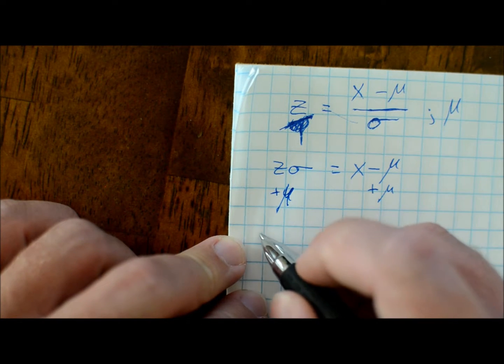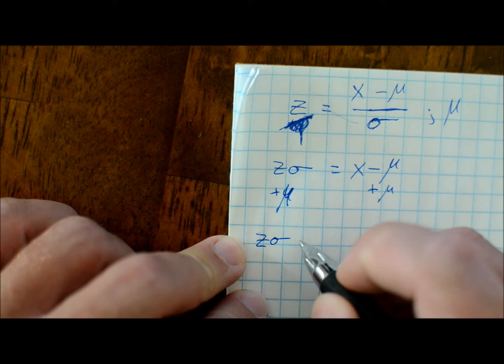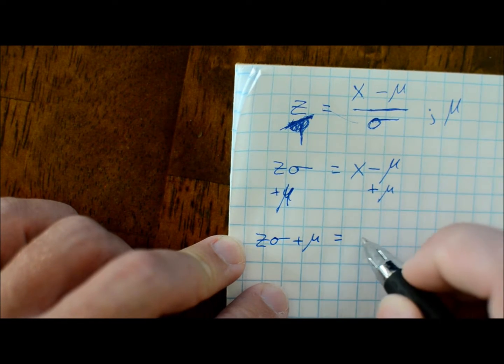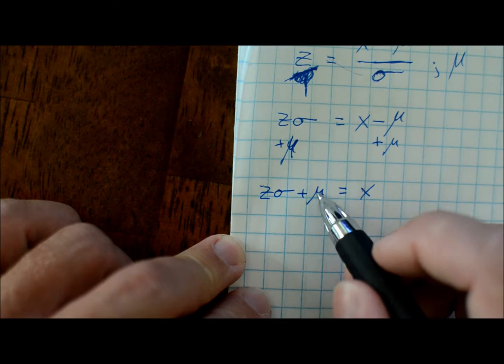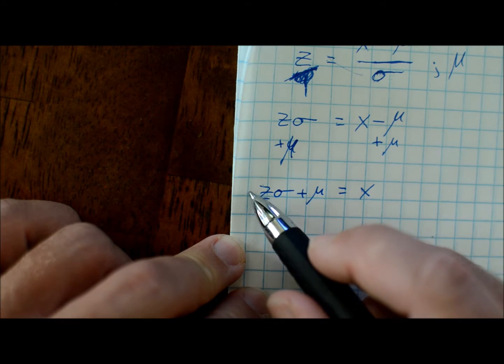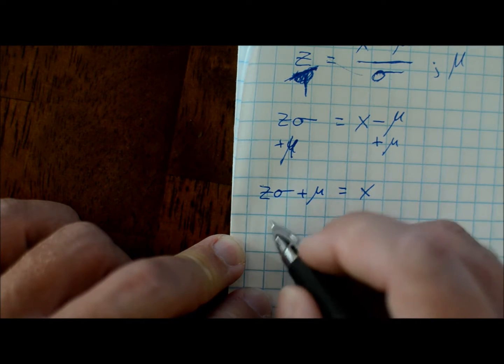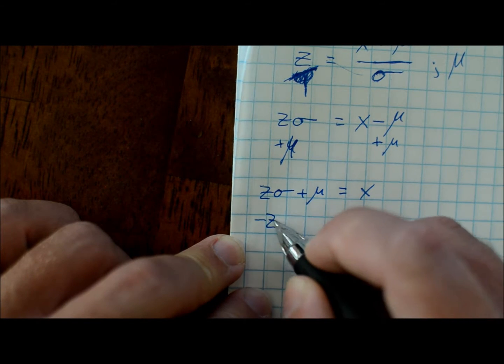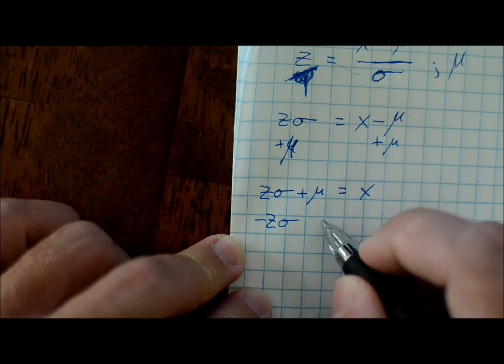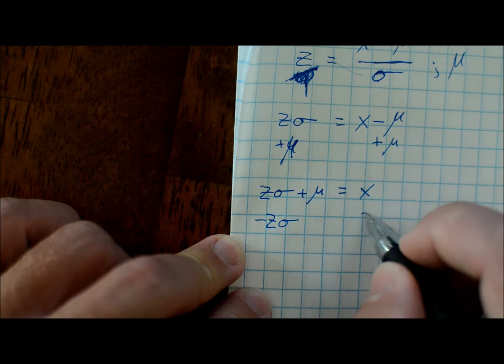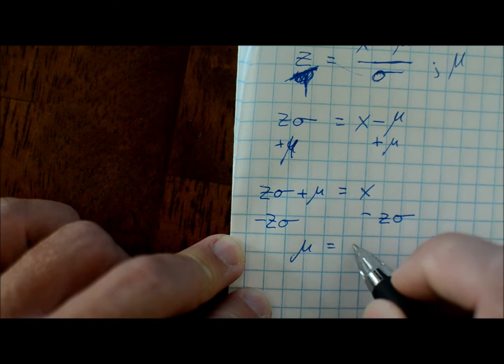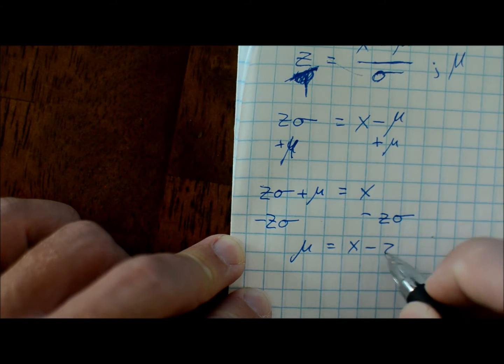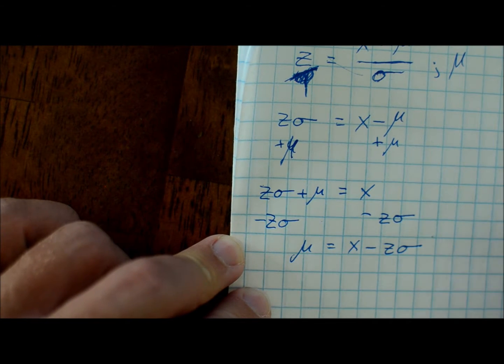So now we have zσ plus μ equals x. To get μ by itself, you subtract this term - minus zσ - which leaves you with μ equals x minus zσ. That's all there is to it.